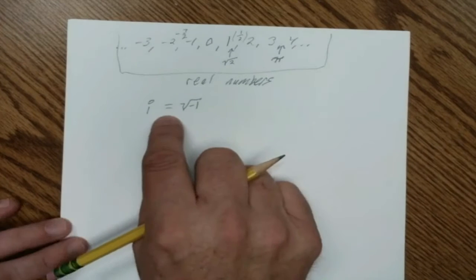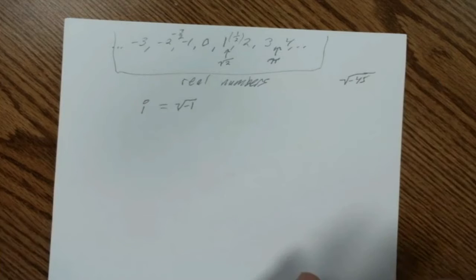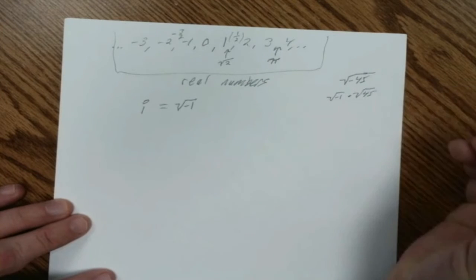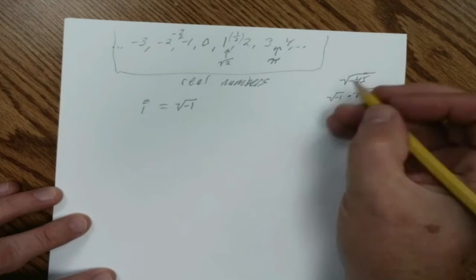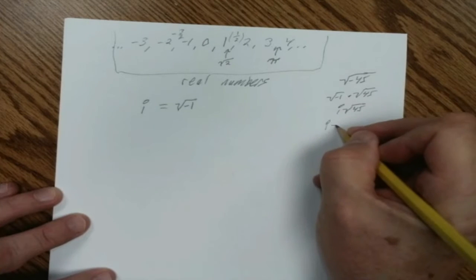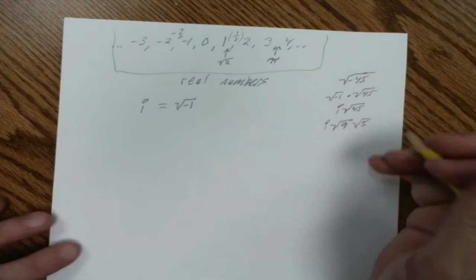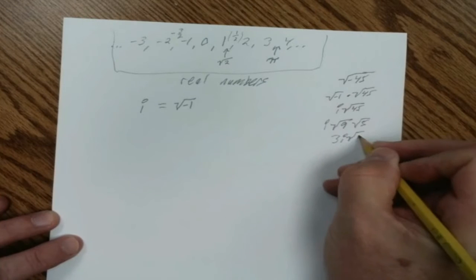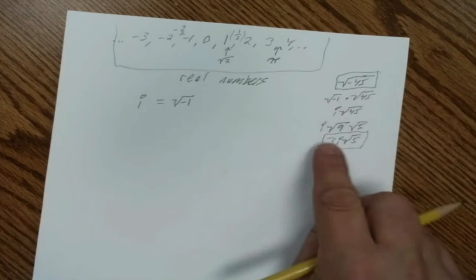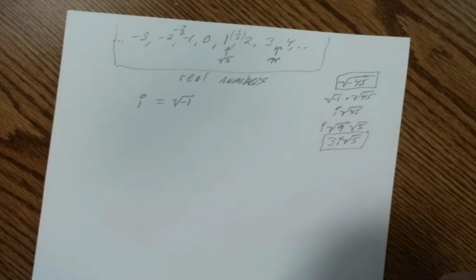For example, if we're trying to find the square root of negative 45, before we just said no solution. But now we know we can break that out to the square root of negative one times the square root of 45. We change the square root of negative one to i, so that's i times the square root of 45. We can break down 45 as the square root of 9 times the square root of 5, and since the square root of 9 is 3, we get 3i times the square root of 5. So the simplified form of the square root of negative 45 is 3i√5 — an imaginary solution.